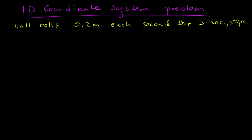In this video, we're going to do a problem practicing with one-dimensional coordinate systems. So we have a ball rolling 0.2 meters each second for three seconds, and then stops.